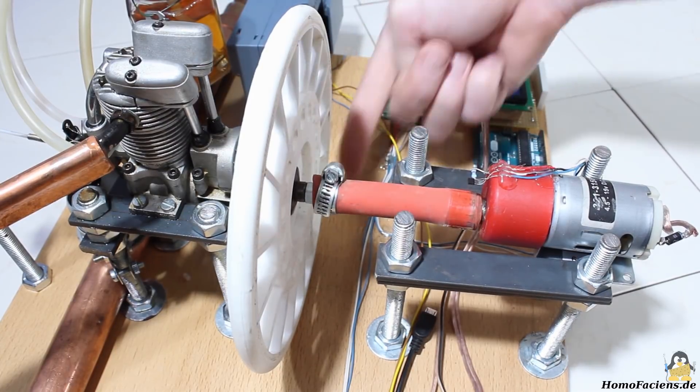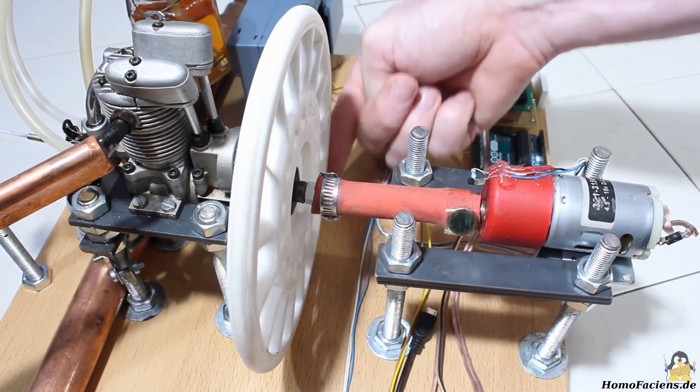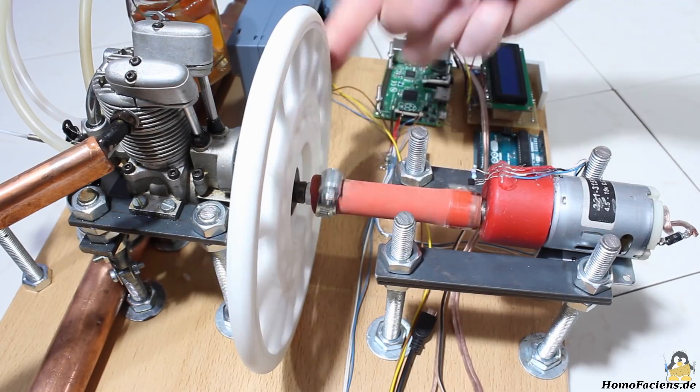The second motor has a transmission of 1 to 2.5 and is driven by a 4-stroke model engine.